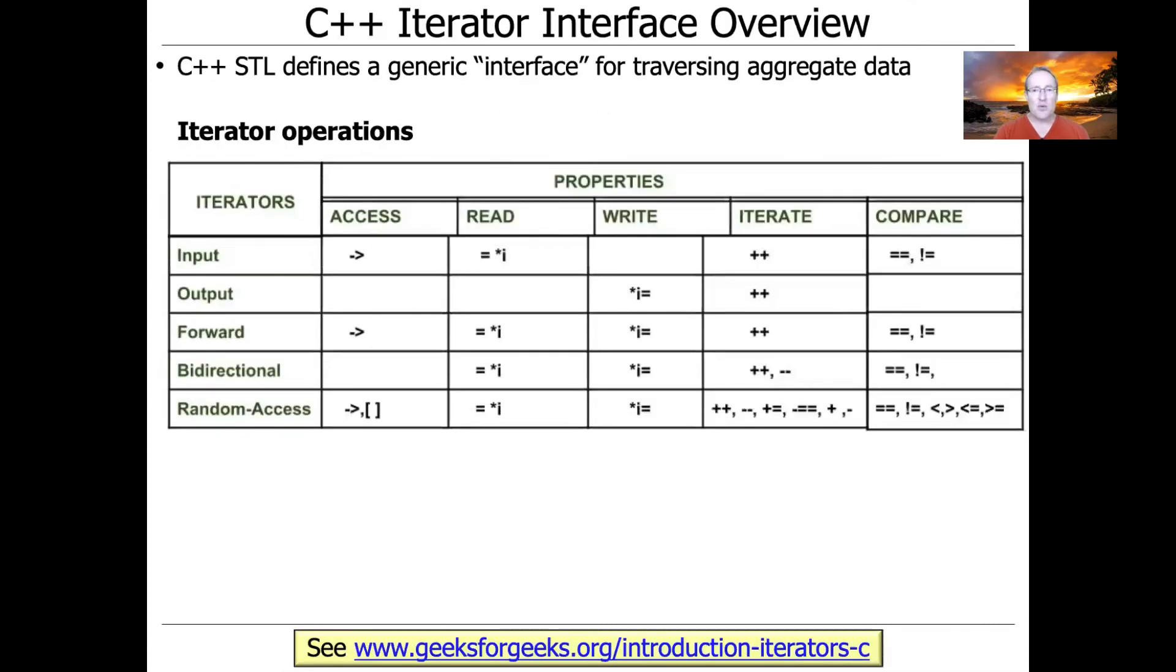Now, as we'll see, as we've discussed before, C++ STL defines a generic interface, and I'm using that word loosely, for traversing aggregate data. And the interface is in terms of all the different operations you can do on pointer arithmetic, like plus plus and minus minus and so on and so forth. So if you take a look at the link at the bottom of this page, it'll give you a reminder about how all these different mechanisms work in STL and C++.